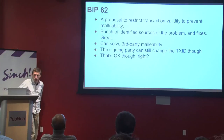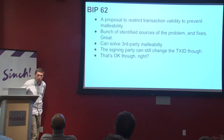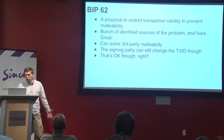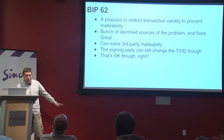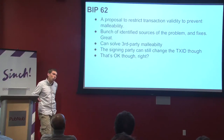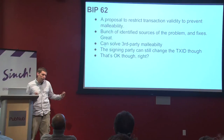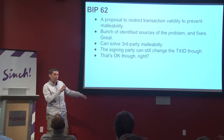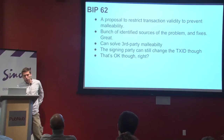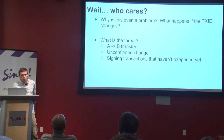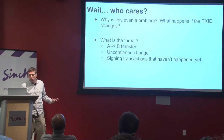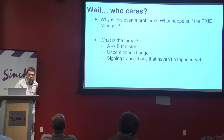BIP 62 wants to restrict transaction validity to prevent malleability. They've identified a whole bunch of sources: the S value being negative — ban the negative S value; pushing stuff onto the stack — only data pushes allowed. This seems able to solve third-party malleability where, say, Alice sends to Bob but Carol grabs the transaction and changes it. But the signing party can always change the TX ID. So who cares? Why exactly is this even a problem? What happens if the TX ID changes? I'll talk about three things: an A-to-B transfer, unconfirmed change spends, and signing transactions that haven't happened yet.